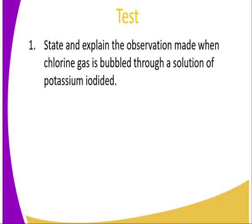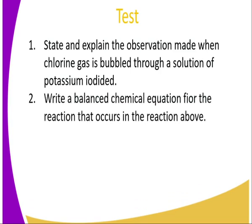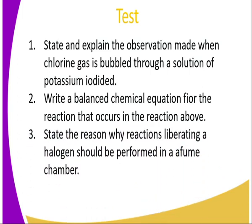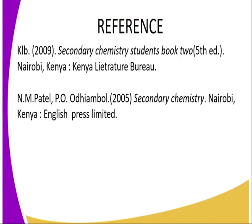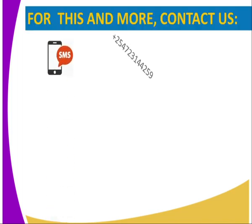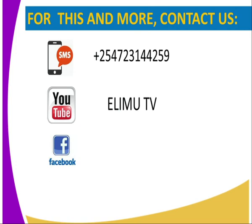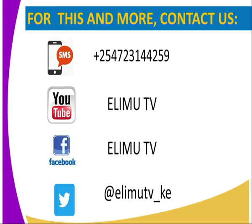Now let's look at the following questions: State and explain the observation made when chlorine gas is bubbled through a solution of potassium iodide — this is a displacement reaction based on the reactivity of halogens. Write a balanced chemical equation for that reaction, and state why reactions liberating a halogen should be performed in a fume chamber. Give one application of a halogen. For more, refer to Secondary Chemistry Student Book 2, or visit our YouTube and Facebook page at Erimu TV, or tweet us at Erimu TV underscore KE. Stay tuned for more lessons.